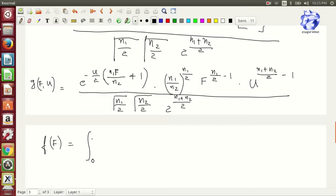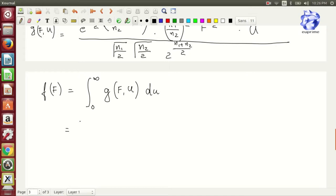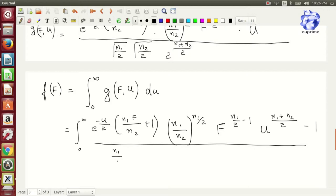Upon completion of the equation, we find that f(F) is equal to integration 0 to infinity of g(F, u) with respect to du, which is equal to integration of 0 to infinity e to the power minus u by 2 into n1·F by n2 plus 1.